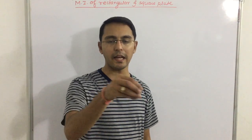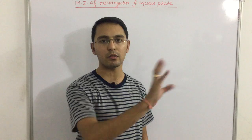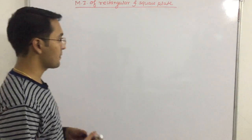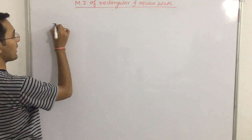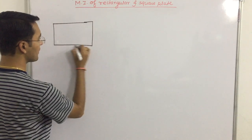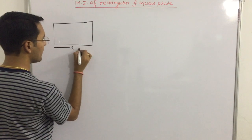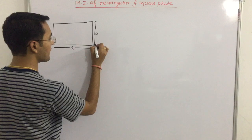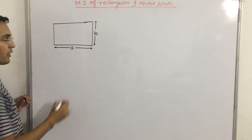First, we are taking a rectangular plate. We have a rectangular plate which is length A and breadth B.